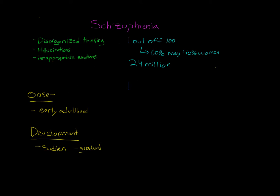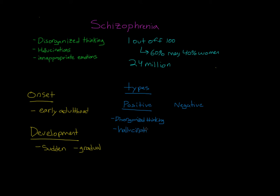Now let's talk about the different types of schizophrenia. In general, there are two main types: positive schizophrenia and negative. Positive schizophrenia is associated with the addition of symptoms that we don't normally find in regular people. This is where we get things like disorganized thinking, and hallucinations — seeing things that aren't there or hearing things that aren't real. There's also an increase in inappropriate emotional responses, such as laughing or crying at inappropriate times.